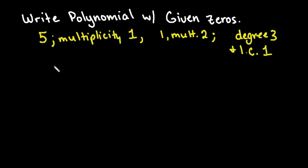Hi, for this video what we're going to do is write a polynomial with the given zeros and the stated multiplicity. For this particular example we want to have a leading coefficient of 1 and we want it to be degree 3.